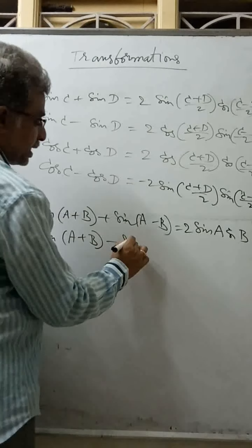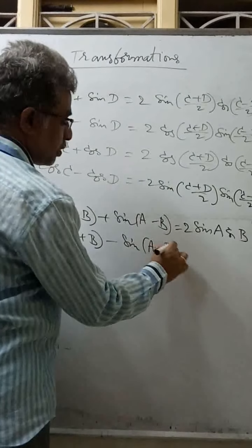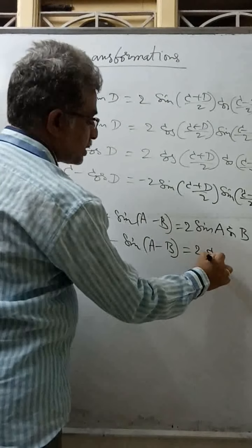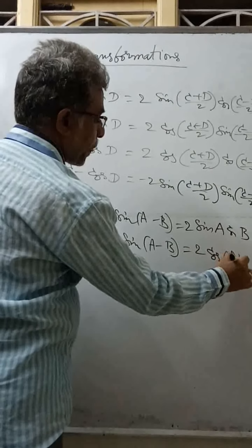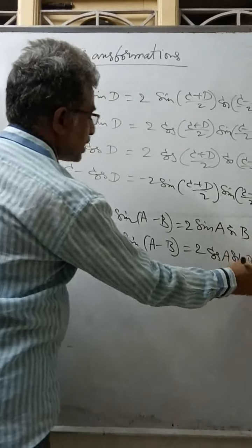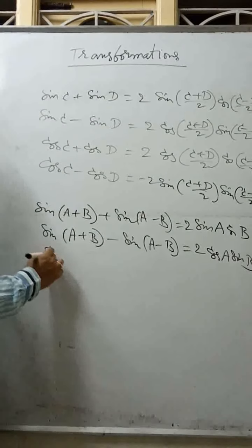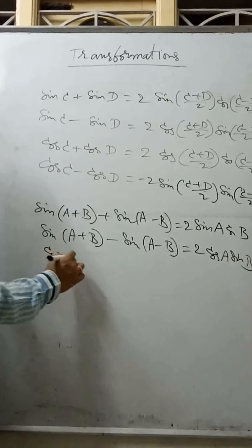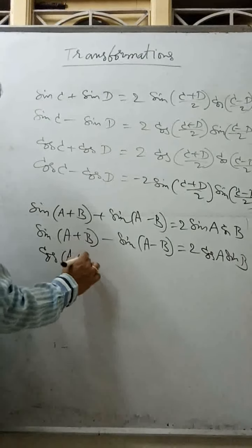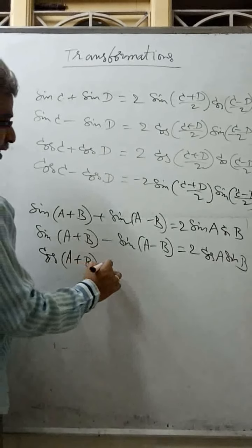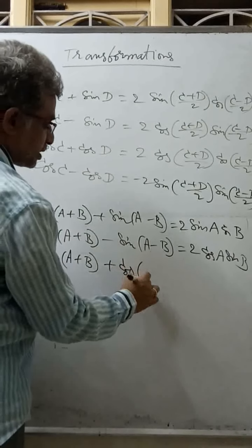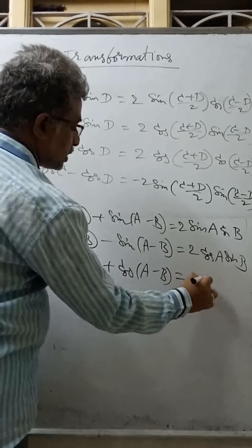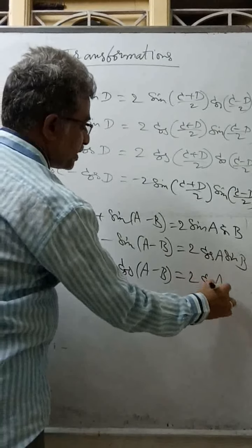Similarly, sin(A+B) minus sin(A-B) equals 2 cos A sin B. Same substitution: in place of C substitute A+B and D substitute A-B. Cos(A+B) plus cos(A-B) equals 2 cos A cos B.